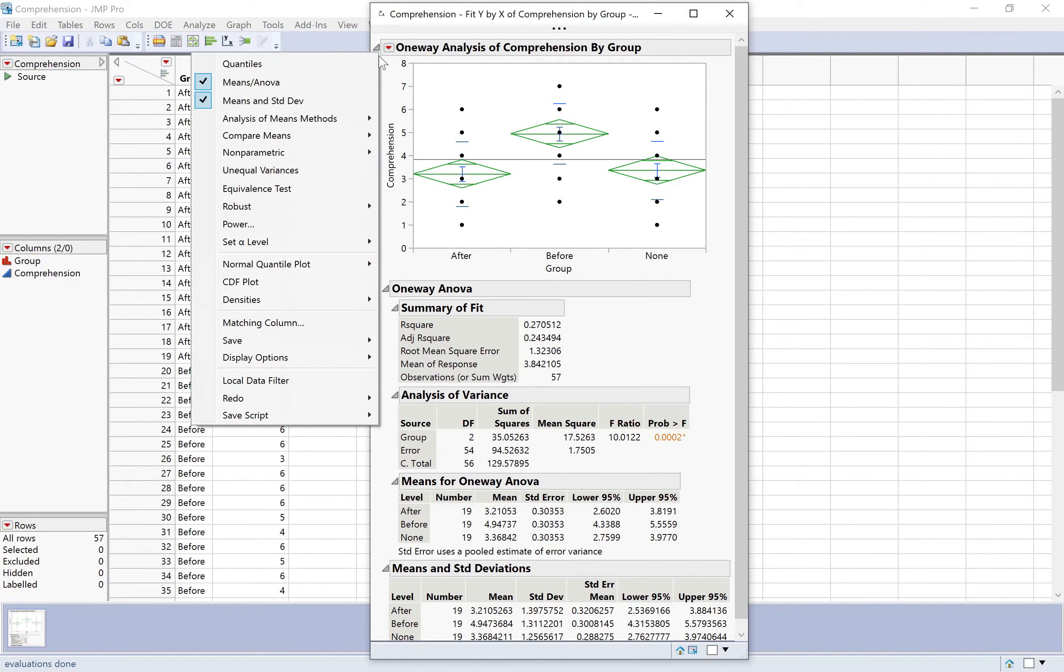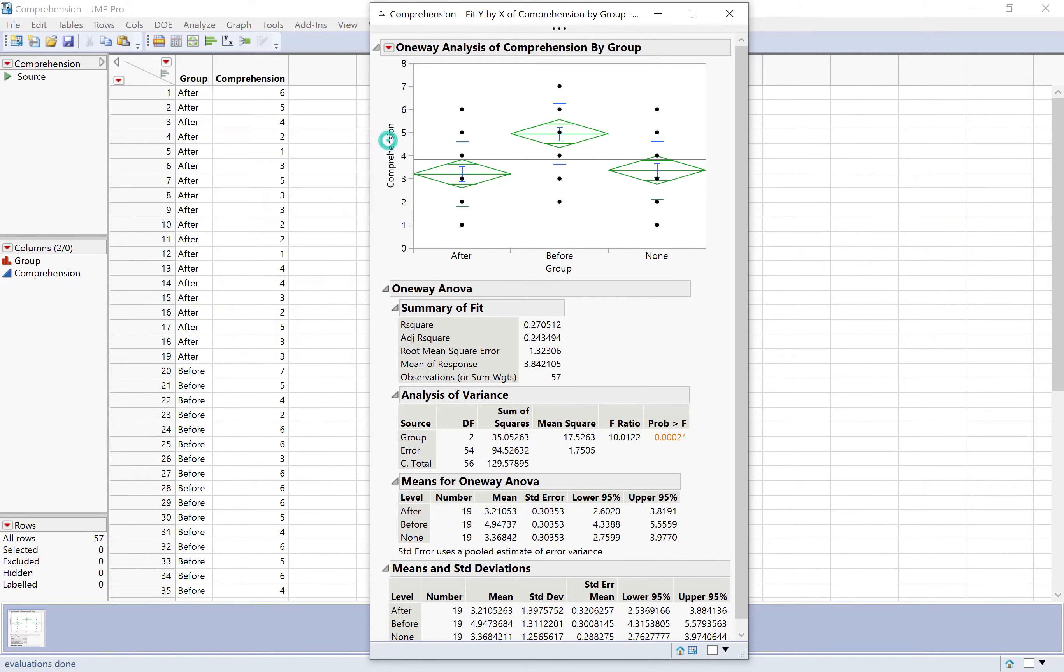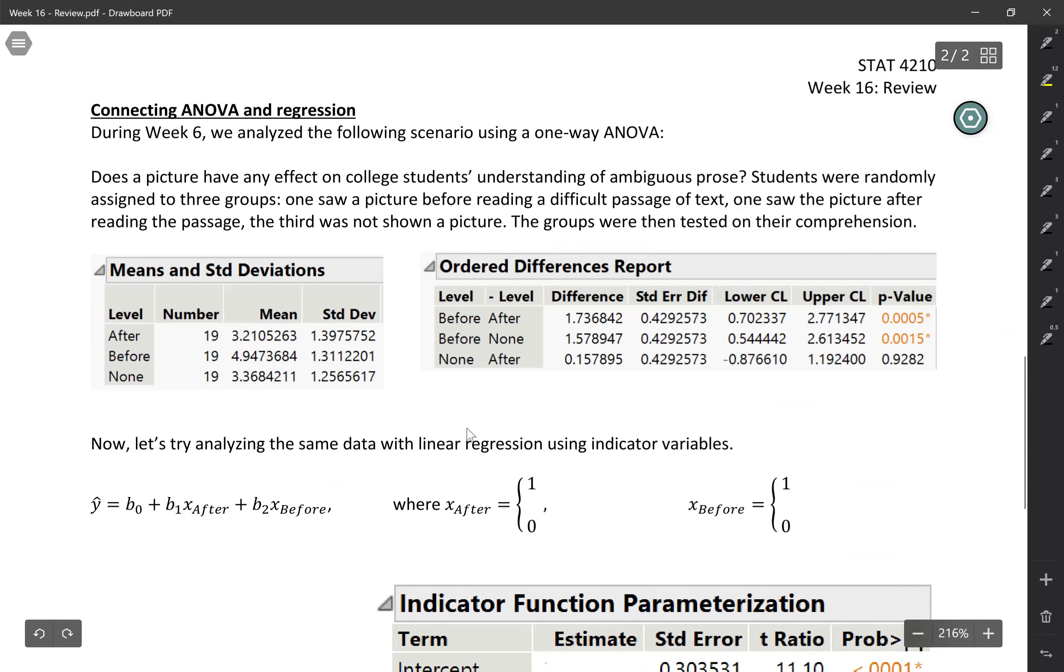But if we wanted to do pairwise comparisons, we would do compare means. And for now, I'm just going to do t-test because that's going to be consistent with the test in regression. Okay, so I've copied the output that you need into the notes.